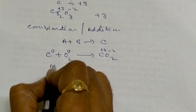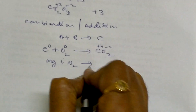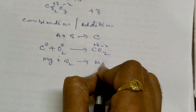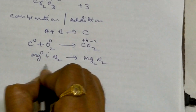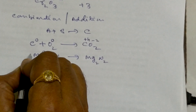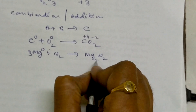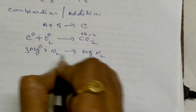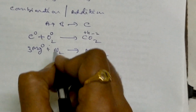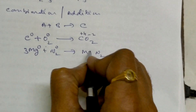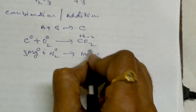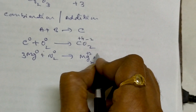Another example: magnesium plus nitrogen gives magnesium nitride. Balance it first: 3Mg plus N₂ gives Mg₃N₂. Mg is 0 and N₂ is 0 before the reaction. In Mg₃N₂, magnesium is plus 2 — 3 times plus 2 equals plus 6 — and nitrogen is minus 3. This is another combination reaction that is also a redox reaction.